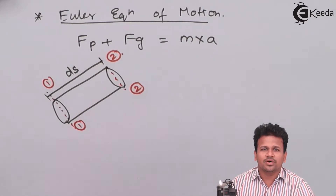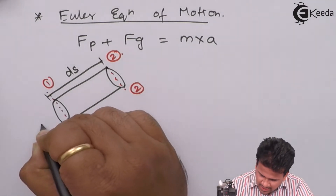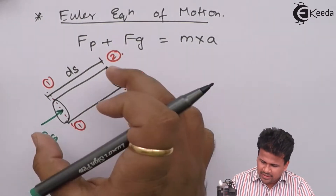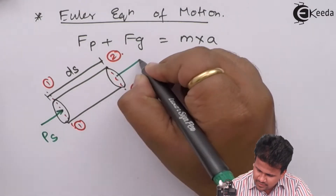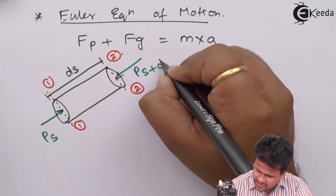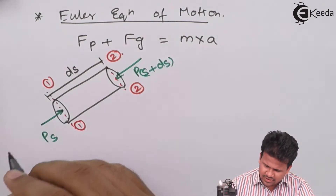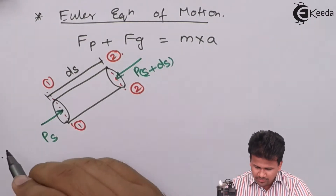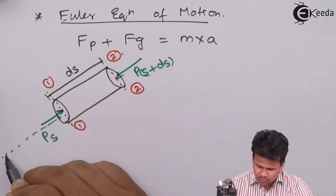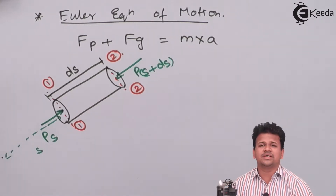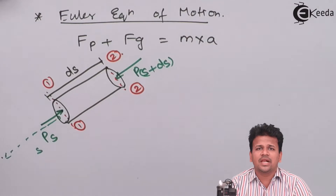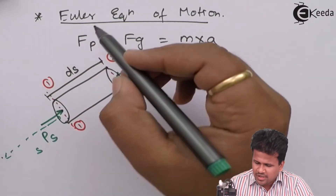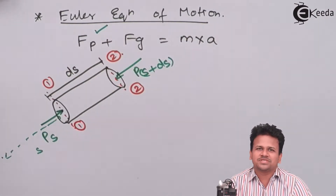We are applying two forces here. The first force is due to the pressure on the fluid. The pressure at position 1, let us consider this as P(s). The pressure at position 2 will be equals to P(s + ds). Why is it s plus ds? Because we are assuming there is one origin, and from the origin the distance till section 1 is s. Hence the pressure here is P(s), the pressure at the inlet, and P(s + ds) is the pressure at the outlet.